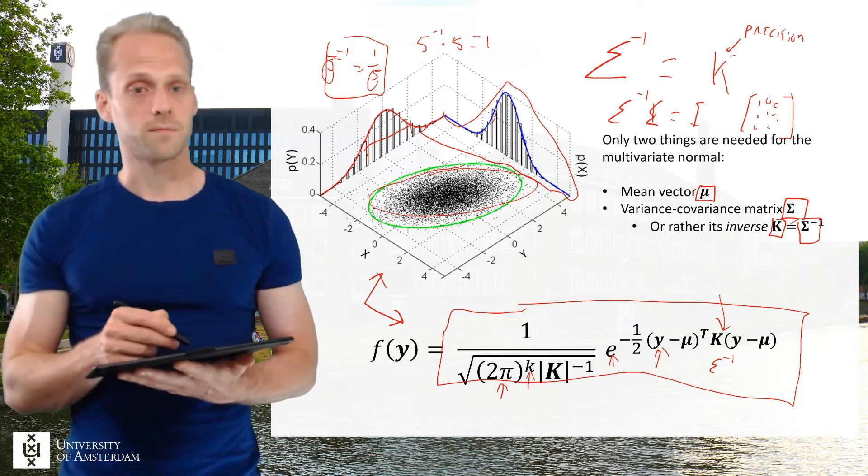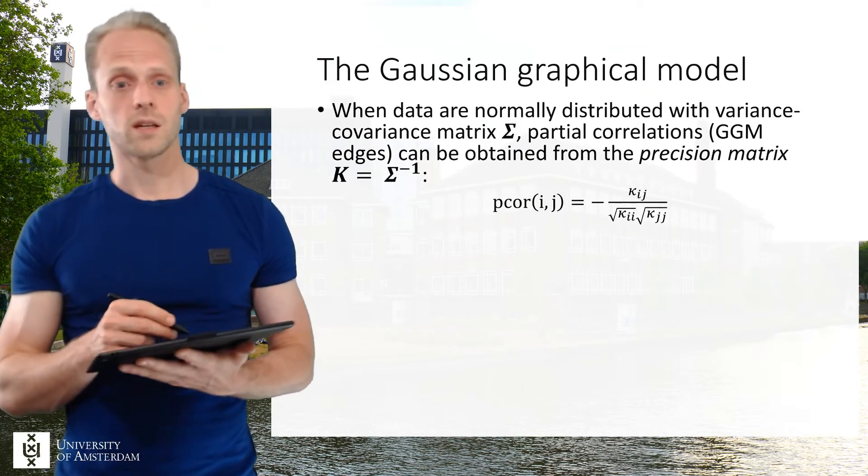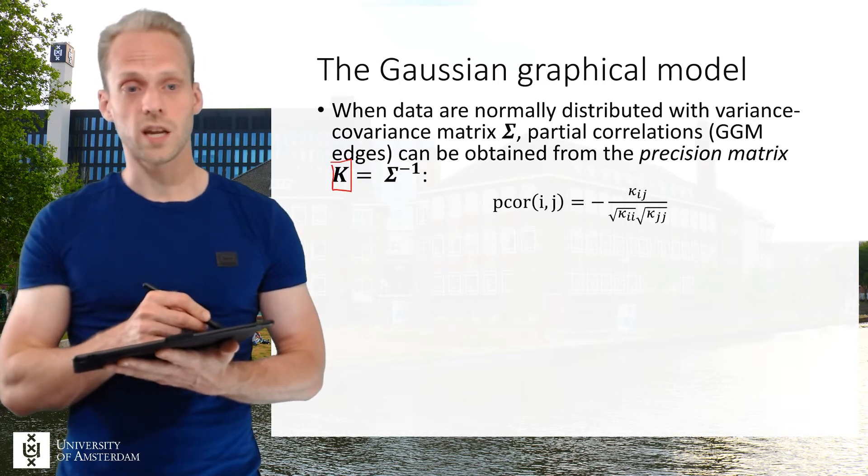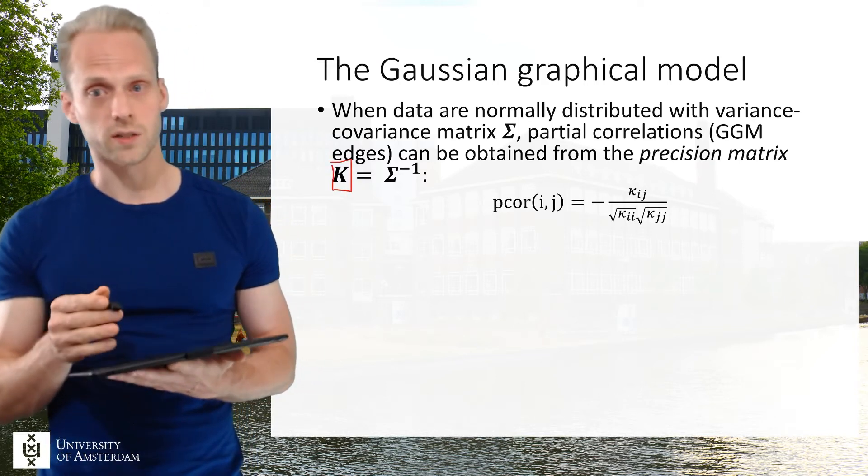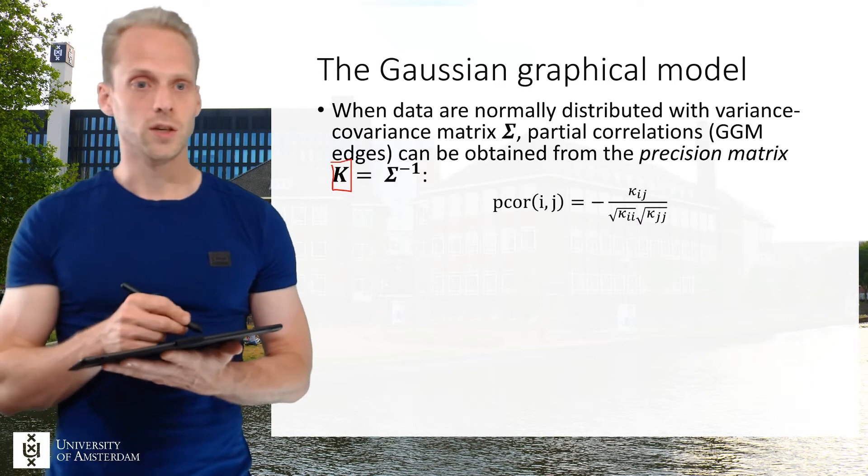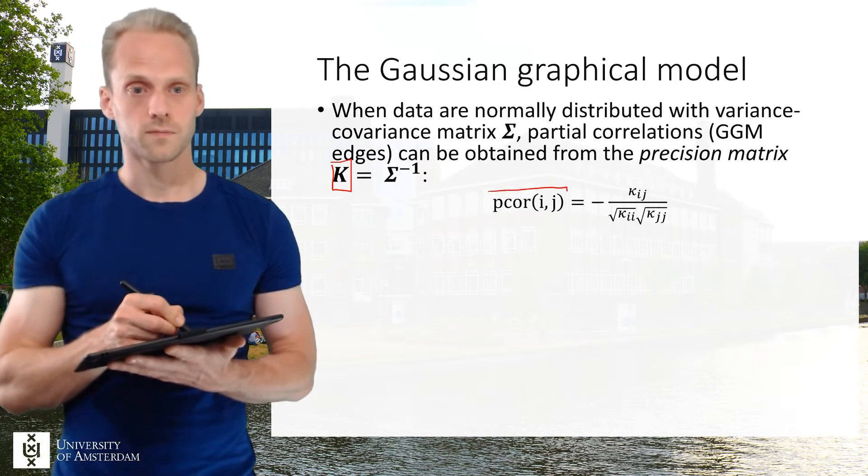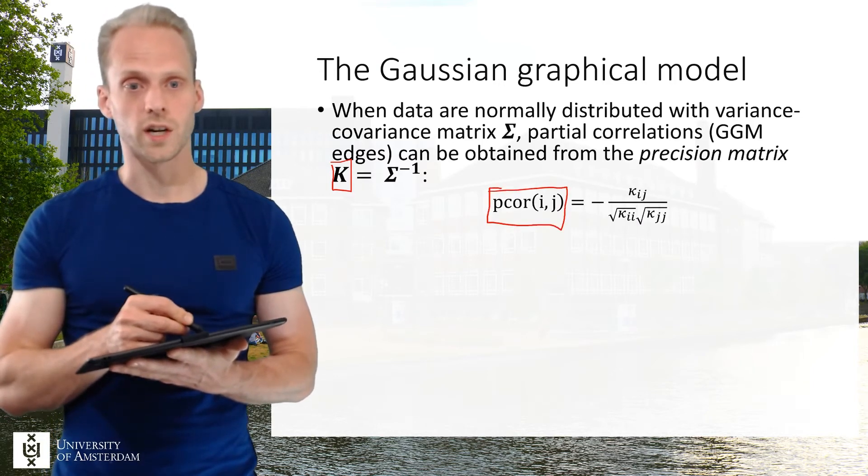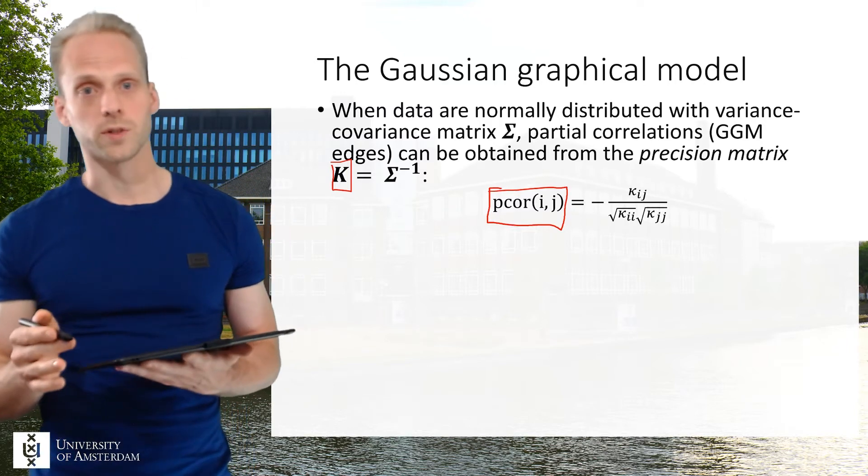So it turns out that if you standardize this kappa matrix in the same way that you would standardize a covariance matrix to correlation matrix, you get the partial correlation. The partial correlation between two variables given all other variables in the network.